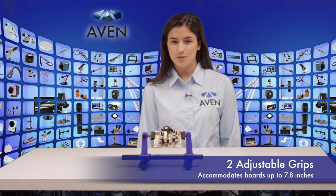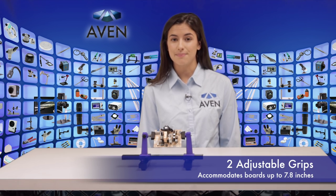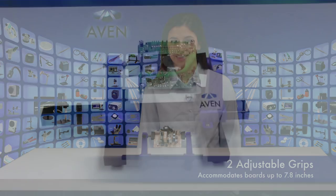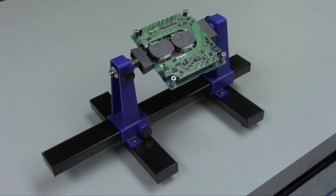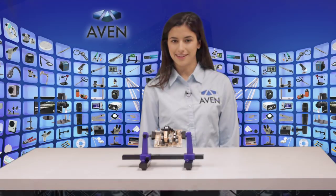The holder features two adjustable grips on a retractable stand to accommodate board sizes up to 7.8 inches in length. The extra sturdy base, constructed from rigid metal, includes four rubber feet to provide additional stability.